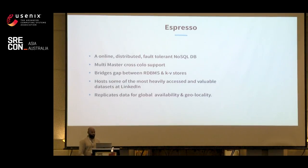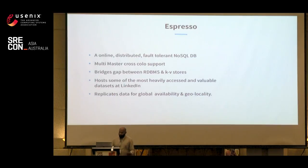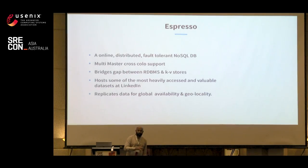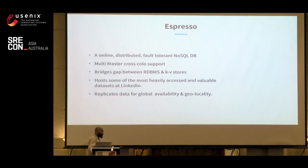So what is Espresso? Espresso is an online fault-tolerant key store that we have — it's a NoSQL system. It supports multi-master software, so we have writes coming in from all colos, syncing across all colos, making data available geographically. It bridges the gap between RDBMS and key-value stores. We have in-memory key-value stores that are really fast but don't take writes well, and traditional RDBMS like Oracle and MySQL that don't scale well. That's where Espresso fits in.